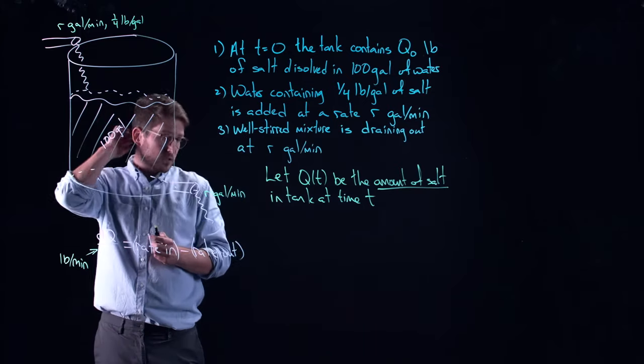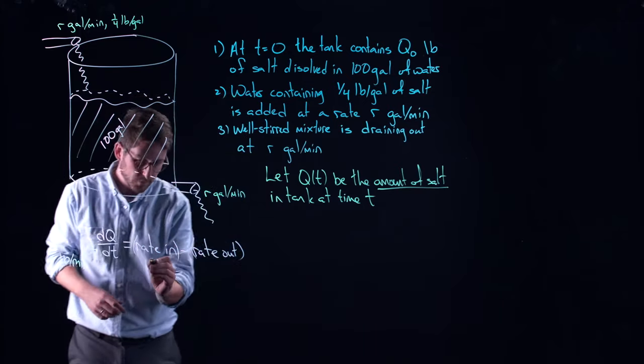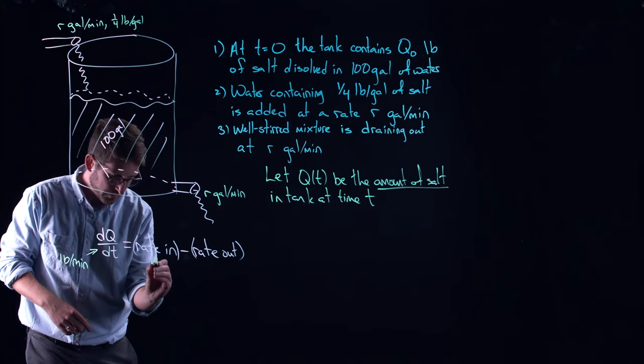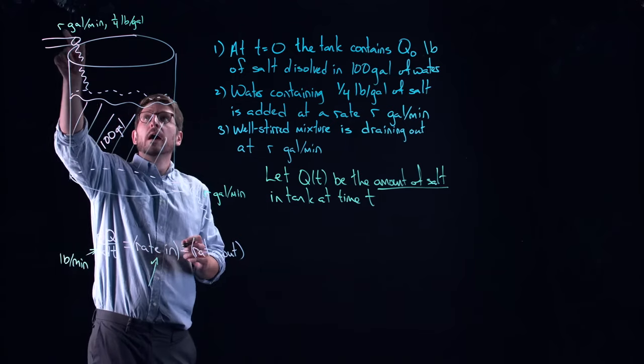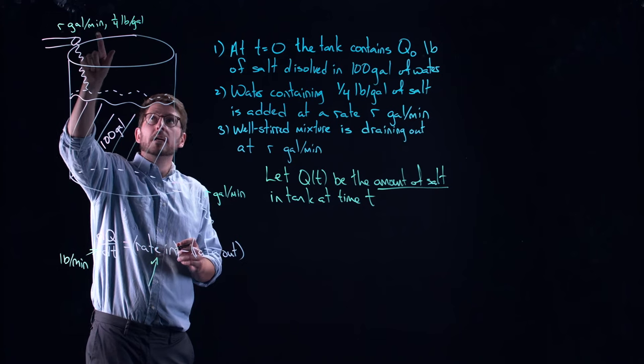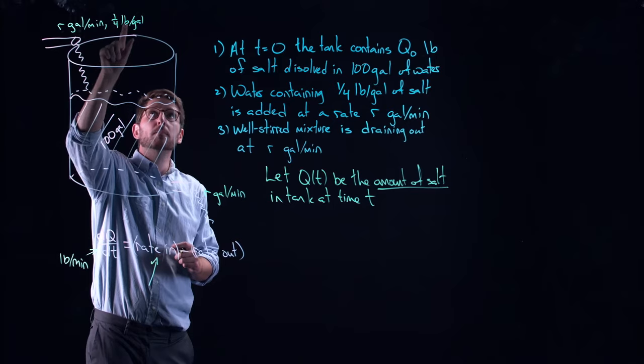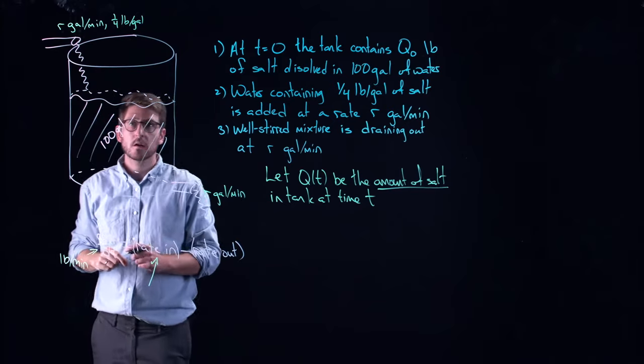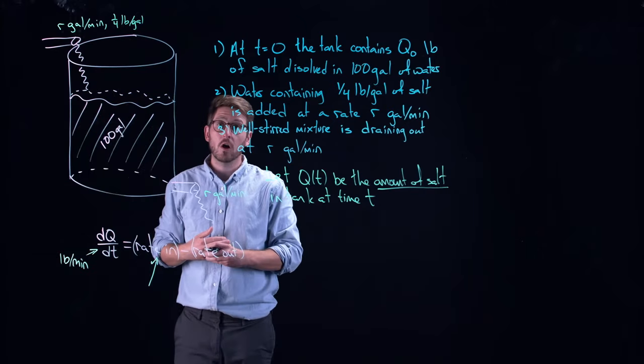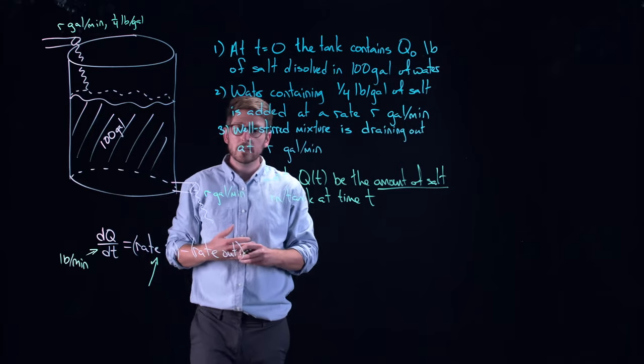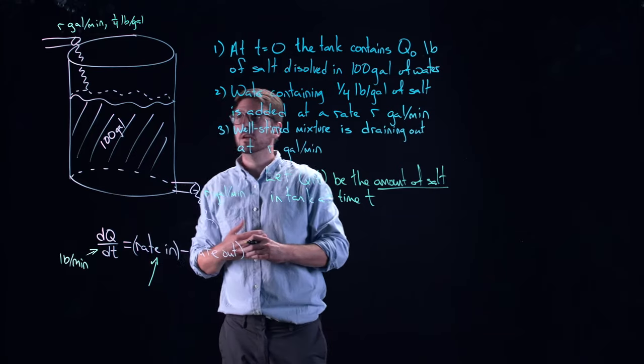That means that the right-hand side also has to be in the units pounds per minute. And in particular, rate in and rate out independently have to be in terms of pounds per minute. Let's just take a look at something. So for the rate in, we have R gallons per minute coming in. And of those gallons that are coming in, we have one quarter pounds per gallon of that is salt.